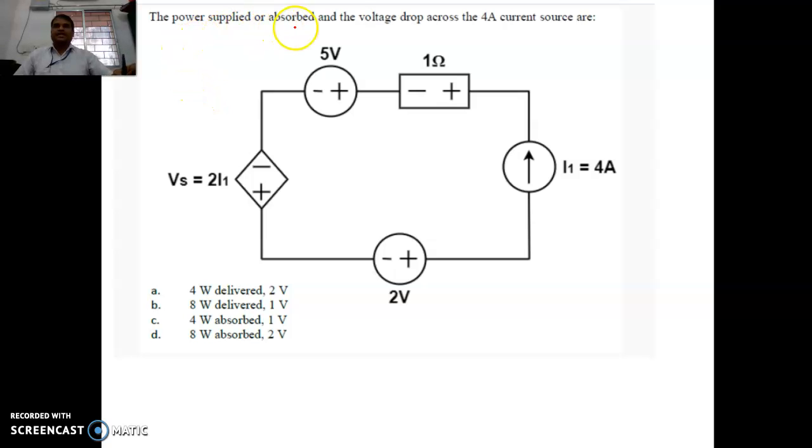Next question. The power supplied or absorbed and the voltage drop across the 4 ampere current source. So 4 ampere current source is here. And the direction is in the upward direction. So let us say we have a polarity in this form. I do not know whether this is the polarity or the reverse is the polarity. Let us say the voltage across this current source is Vx.